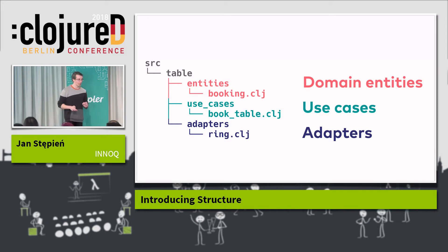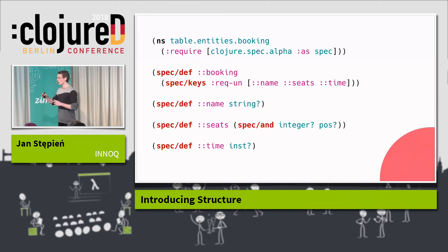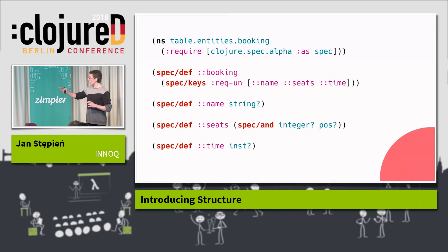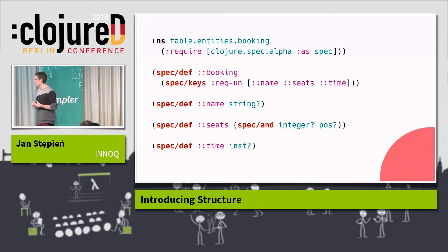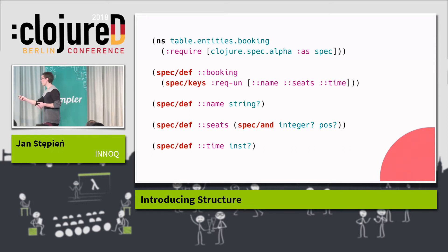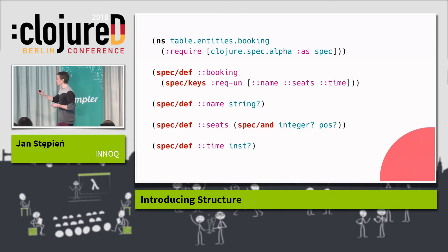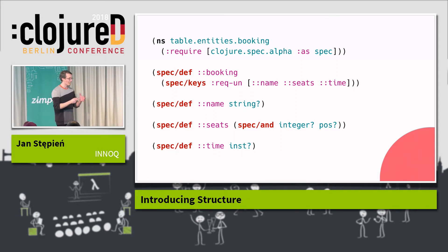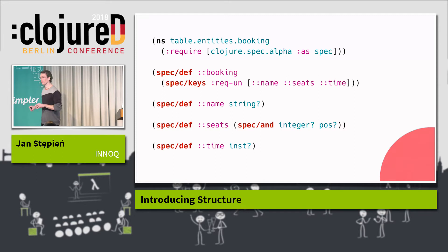Let's start from our domain entities. Here I'm employing Clojure Spec to specify what is a valid booking from the perspective of my logic. A booking is anything which has three keys inside: name, seats, and time. Name has to point to a string, seats has to point to a positive integer, and time is something satisfying the inst predicate — a point in time, an instant. I'm not specifying any record or any concrete representation; I'm just saying this is enough to satisfy my contract. This is a valid entity in the system.